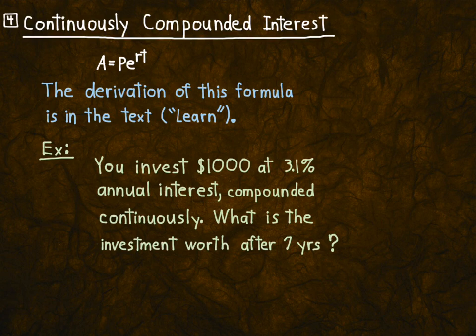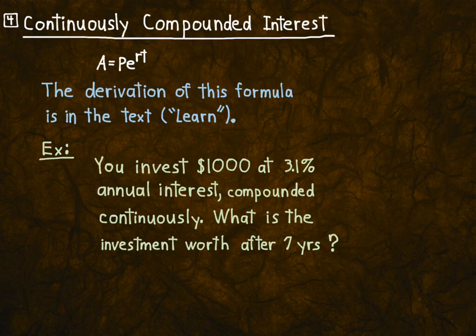So I'm doing this example. You invest $1,000 at 3.1% in annual interest — sound familiar? That's the same thing I did before, but compounded continuously. So this is different. Before it said compounded monthly, compounded weekly, compounded daily. Now it says compounded continuously, and the cue for you is the word 'continuous.' When it's continuously, you'll use this formula. When it's per month, per day, per year, you use the other formula.